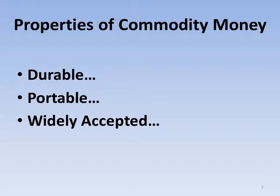The fourth property is it needs to be divisible. Picture using cows as money — never mind that they're not very durable or portable or widely accepted. Imagine you're at the bookstore purchasing your textbooks, and you bring your cow Bessie to the cash register, and they say your books are actually worth a little bit less than the cow. Let's get the chainsaw and make change. An important property of commodity money is that it's divisible, that it can be divided up into smaller quantities, recombined, and nothing is lost in the process.